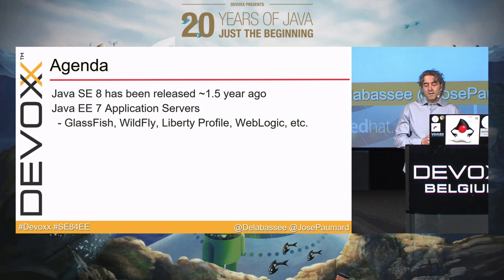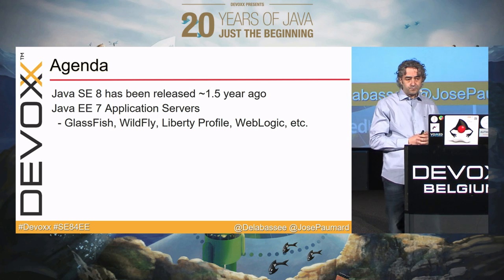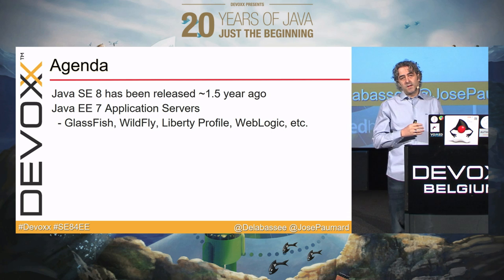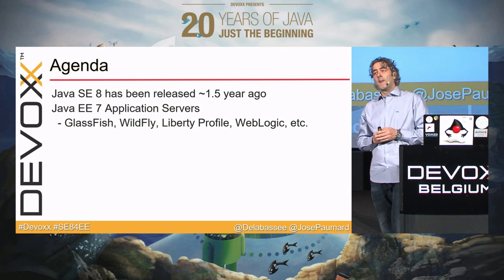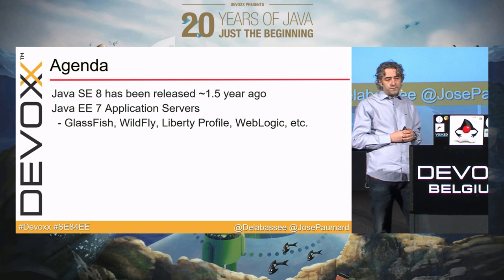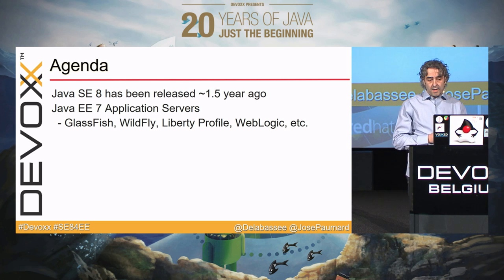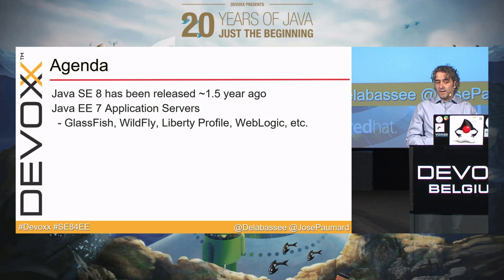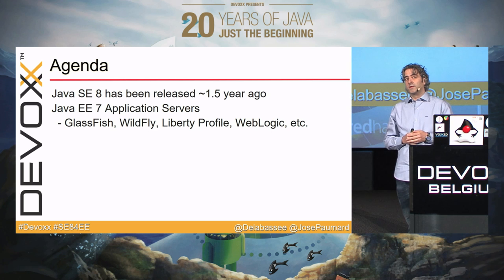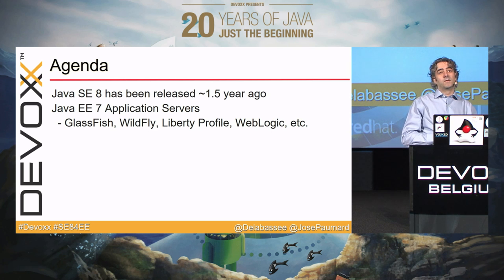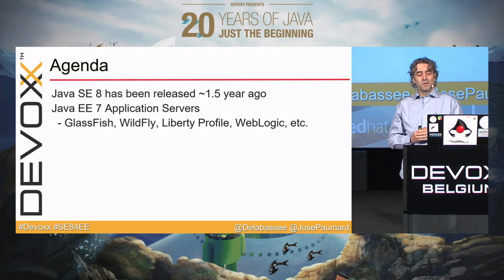Java SE8 was released last year in April, about 18 months ago. On the other hand, we have Java EE7, which is the current version of the specification. There are many application servers out there that are Java EE7 compliant — GlassFish, Wildfly, and so on. Most of them are certified on Java SE8, and some are only certified on Java SE8. GlassFish's latest release only runs on top of Java SE8, and the same is true for Wildfly 10.